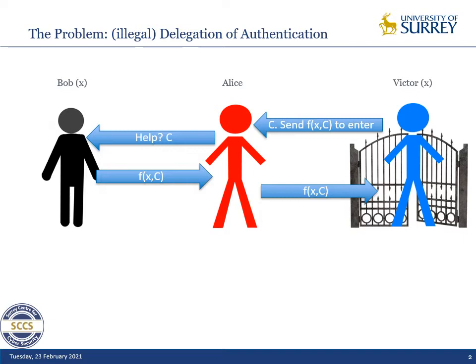Verifying that the card is valid. The idea of illegal delegation of authentication is that Alice would impersonate Bob to Victor with the help of Bob. Alice would receive a challenge from Victor, forward it to Bob, receive his response, and then answer to Victor and pass the protocol.